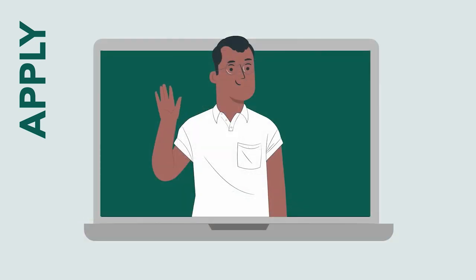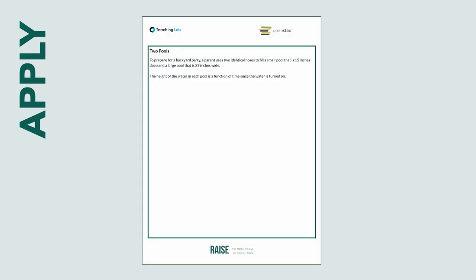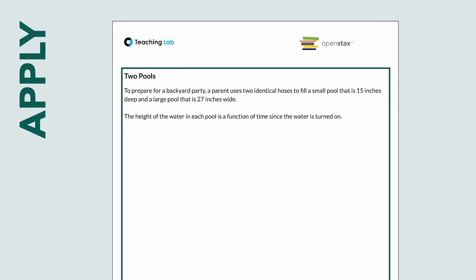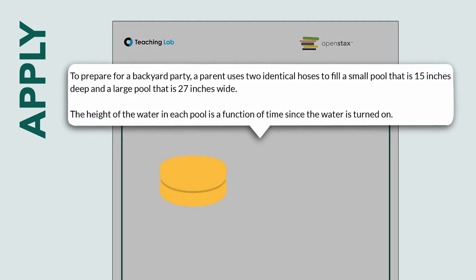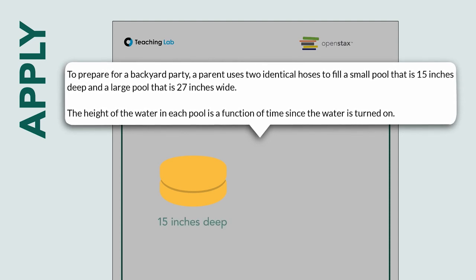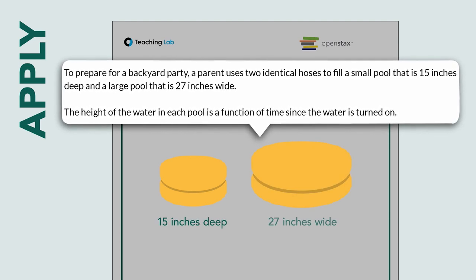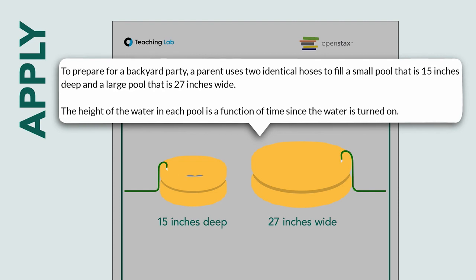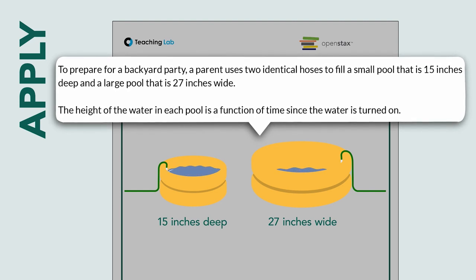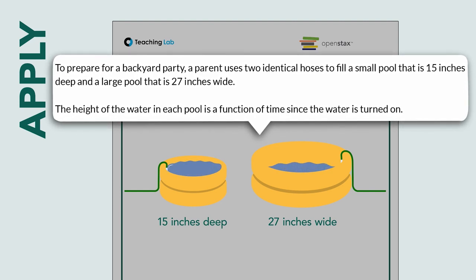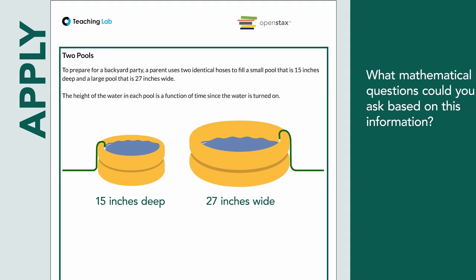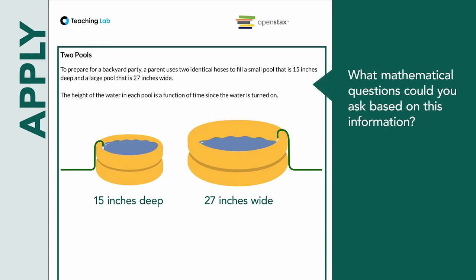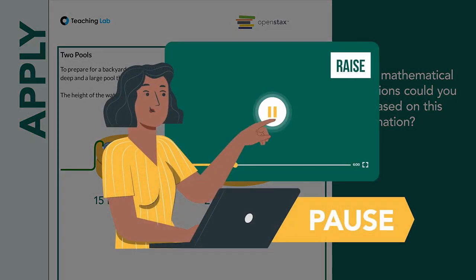Alright everyone, I need you to close your devices for just a moment while we think about this scenario. To prepare for a backyard party, a parent uses two identical hoses to fill a small pool that is 15 inches deep and a large pool that is 27 inches wide. The height of the water in each pool is a function of time since the water is turned on. Take a moment to think about this yourself. What mathematical questions could you ask based on this information? Pause the video and write one down on your note catcher.